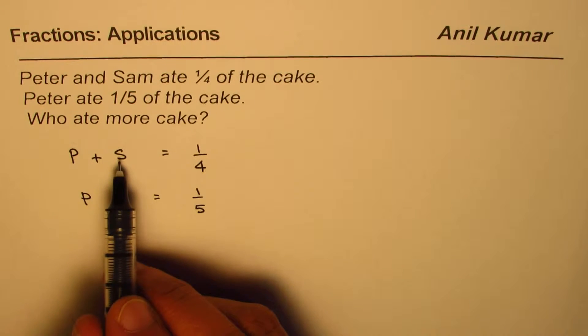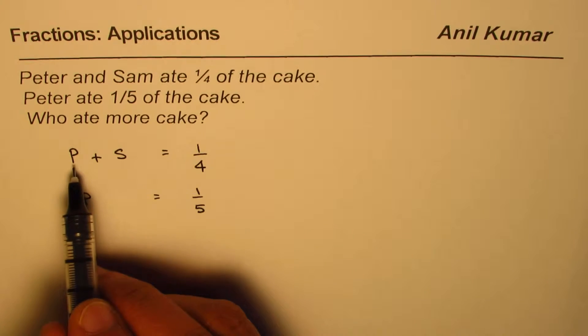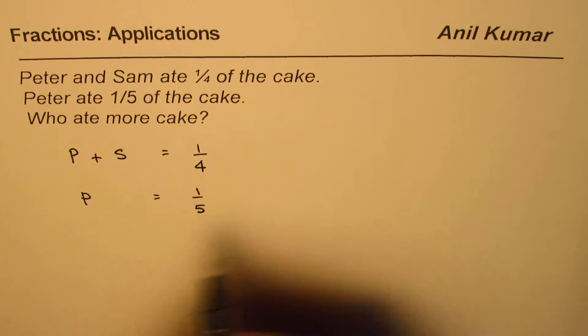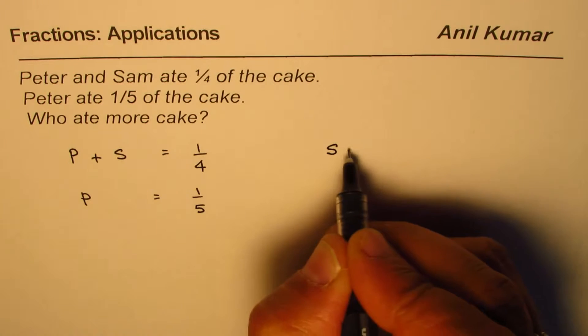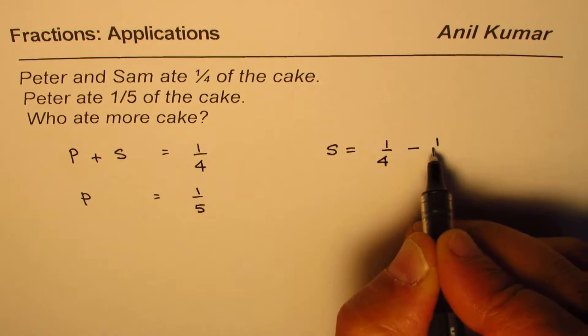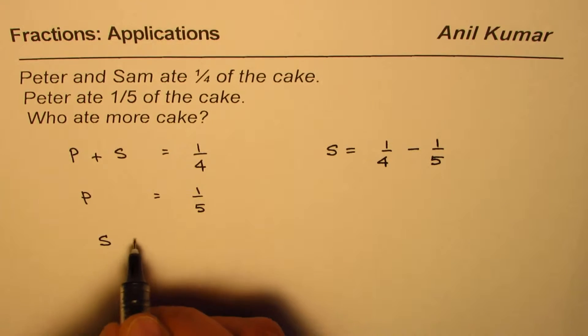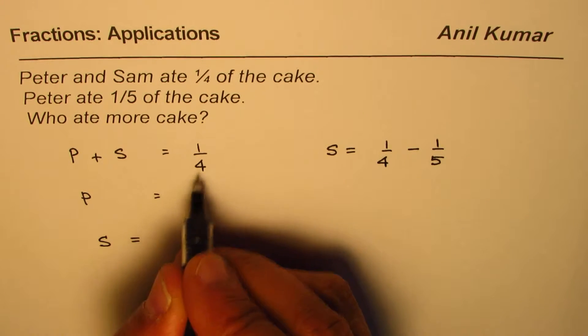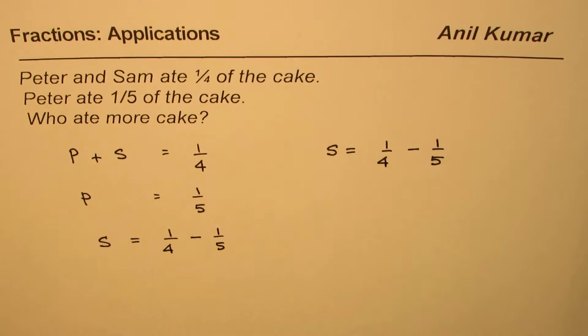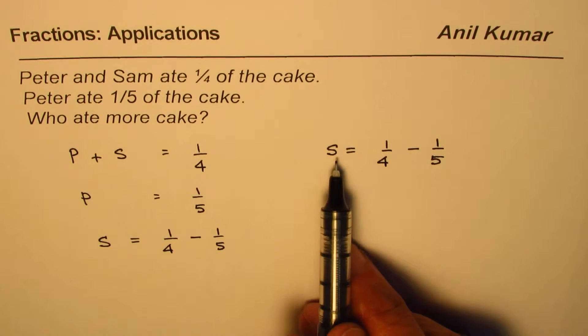So, of course, Sam will eat one-fourth, take away what Peter ate, right? So, combined was one-fourth. So, that means Sam should eat one-fourth, take away one over five. So, from here, we can write Sam ate one-fourth minus what Peter ate, which is one-fifth. You get an idea, right? So, that is what Sam ate.